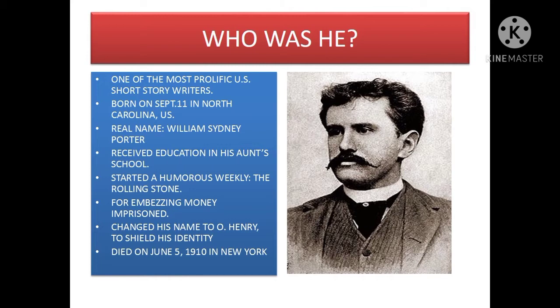He received his education in his own school. He began his career as a humorous weekly writer called The Rolling Stone. For embezzling money, he was imprisoned. He changed his name to O'Henry to shield his identity. He died on June 5, 1910 in New York.